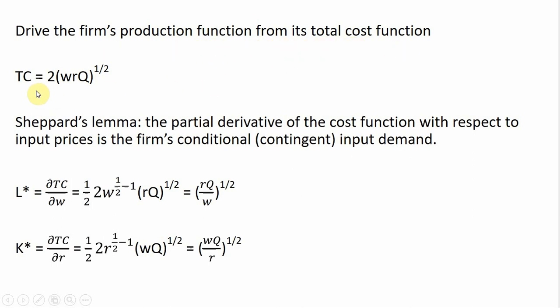We're going to have a firm that has a total cost function given by the following, where W is the wage, R is the rental rate of capital, and Q is the quantity of output. Shephard's Lemma tells us that if we take the partial derivative of the cost function with respect to the input prices, we'll derive the firm's conditional input demand functions.